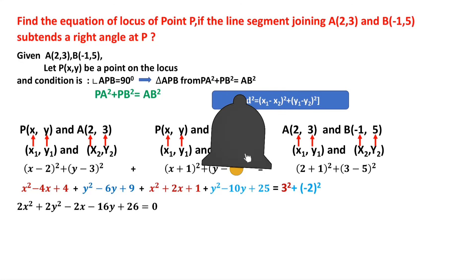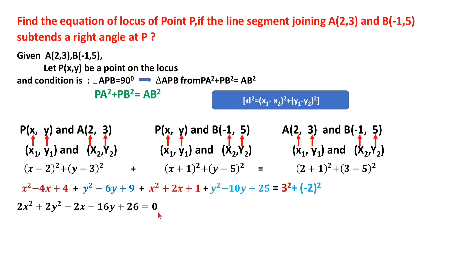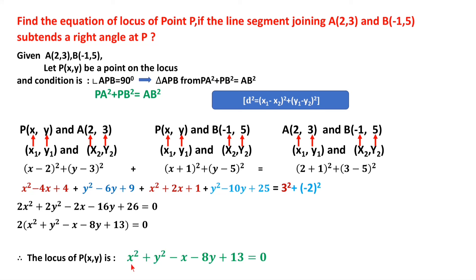Transposing 13: 2x² + 2y² - 2x - 16y + 26 = 0. Since 2 is common in all terms, take 2 as common: 2(x² + y² - x - 8y + 13) = 0. Dividing both sides by 2, the equation of the locus is x² + y² - x - 8y + 13 = 0.